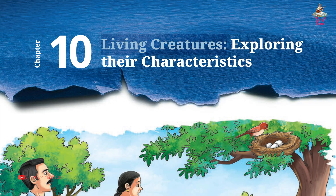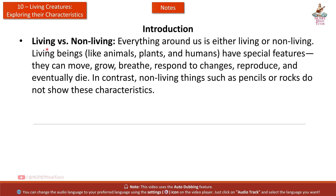Chapter 10: Living Creatures — Exploring Their Characteristics. Short notes and summary from Grade 6 Science book 'Curiosity.' Everything around us is either living or non-living. Living beings like animals, plants, and humans have special features.